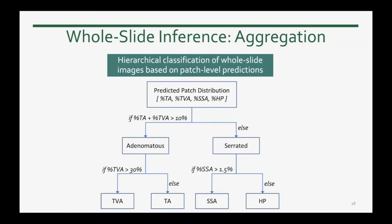After patch classification, we use the distribution of predicted patches for whole slide inference using a decision tree. This hierarchical classification is based on how pathologists perform this task in clinical practice, and the thresholds were learned based on a grid search and cross-validation.